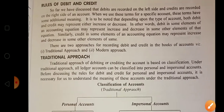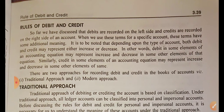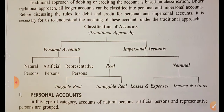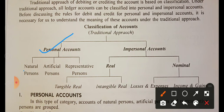We are dedicated to the traditional approach. There are types of personal accounts: natural personal accounts — named after a person, such as Rama; artificial personal accounts — organizations established with a name, such as Reliance Industries or Kiit International University, temples, mosques — all artificial, non-profit organizations; and representative personal accounts — outstanding, prepaid, accrued — all are representative.